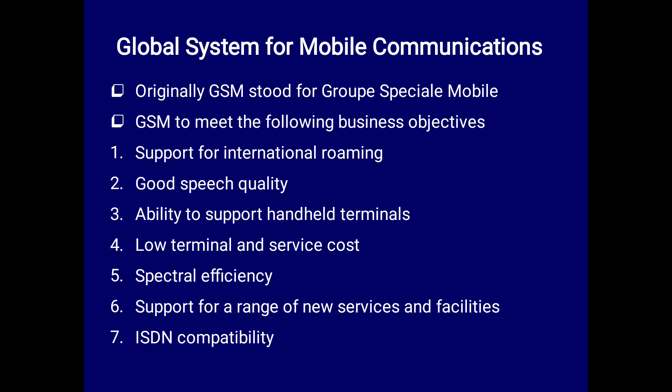The fourth objective is low terminal and service cost — GSM services are not free, and each service has a cost. The fifth is spectral efficiency — whatever spectrum is used by GSM, whether 2G or 3G, must be used efficiently. The sixth objective is support for a range of new services and facilities like email, chat, and WhatsApp. The seventh and final objective is ISDN compatibility — Integrated Switching Digital Network compatibility.